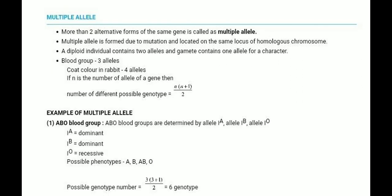Now let's look at multiple alleles. Multiple alleles are alleles where more than two alternative forms of the same gene exist, called multiple alleles. We normally have two alleles — dominant and recessive — for a character. Multiple alleles form due to mutation and are located on the same locus of homologous chromosomes. A diploid individual contains two alleles and a gamete contains one allele for a character.